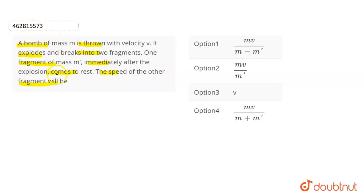We have a bomb initially with mass M and velocity V. Explosion will be divided into two parts - one part has mass m' and the other part has mass M minus m'.